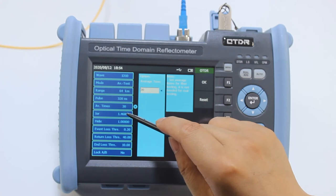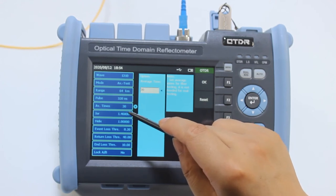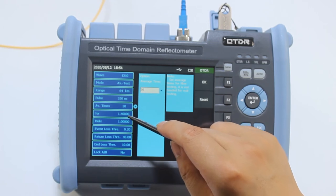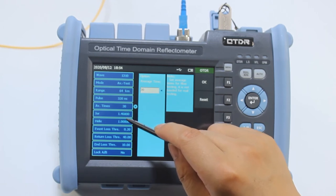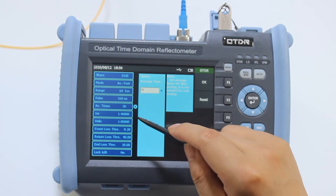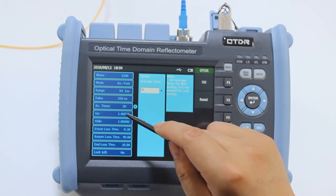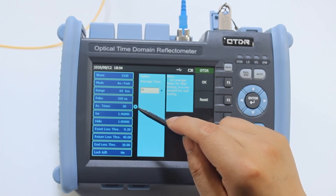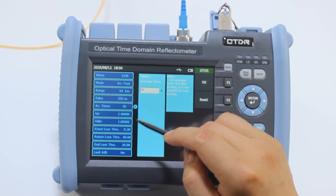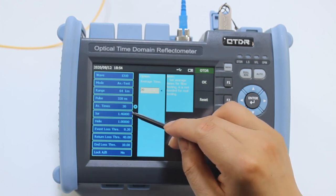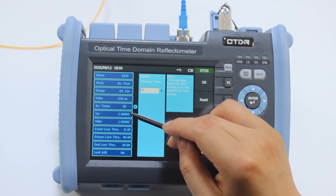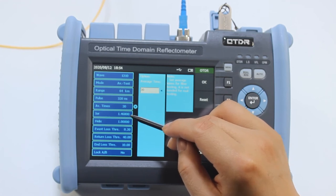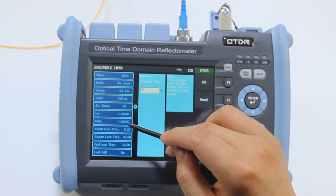IOR is index of refraction. The two values we have to ask from the fiber manufacturer. IOR value affects the measurement fiber length. We use the default value: 1.468 for IOR and 1 for helix.